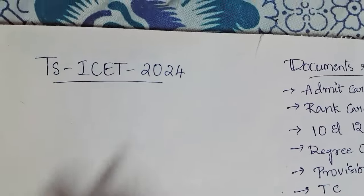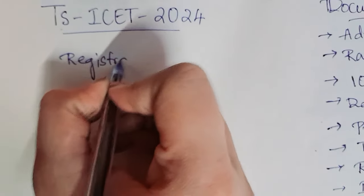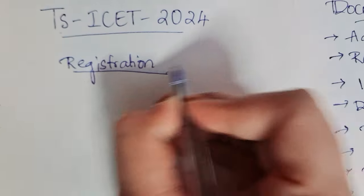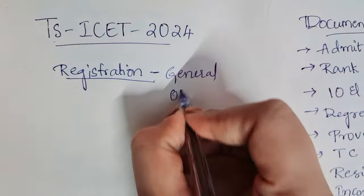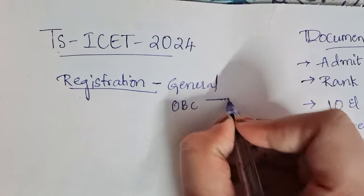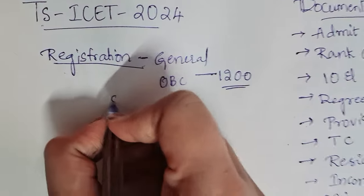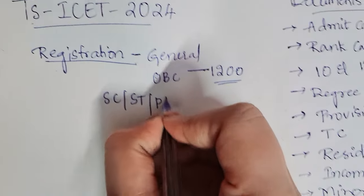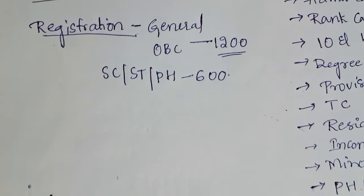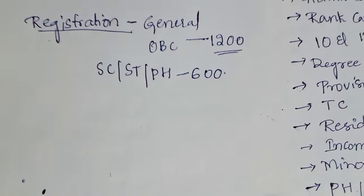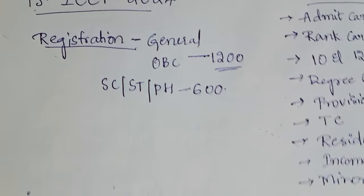First, let's talk about the registration fee for the counseling. For General and OBC candidates, the registration fee will be ₹1200. For SC, ST, or Physically Handicapped students, the registration fee is ₹600.